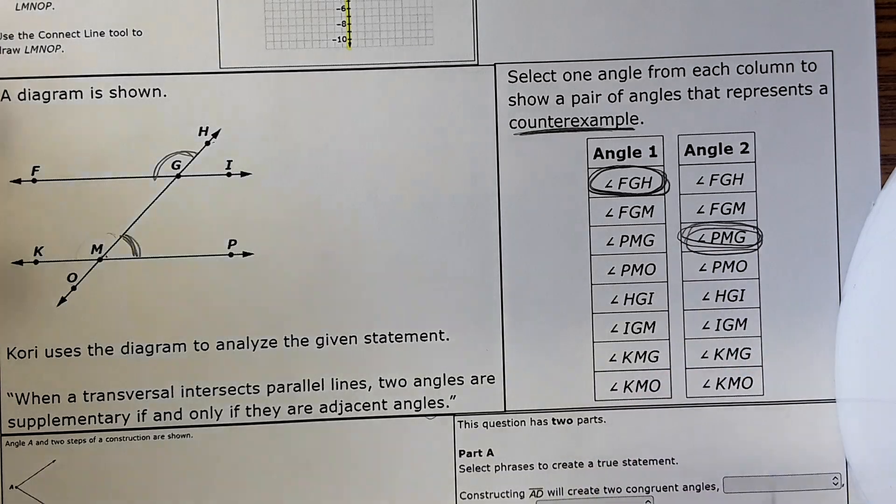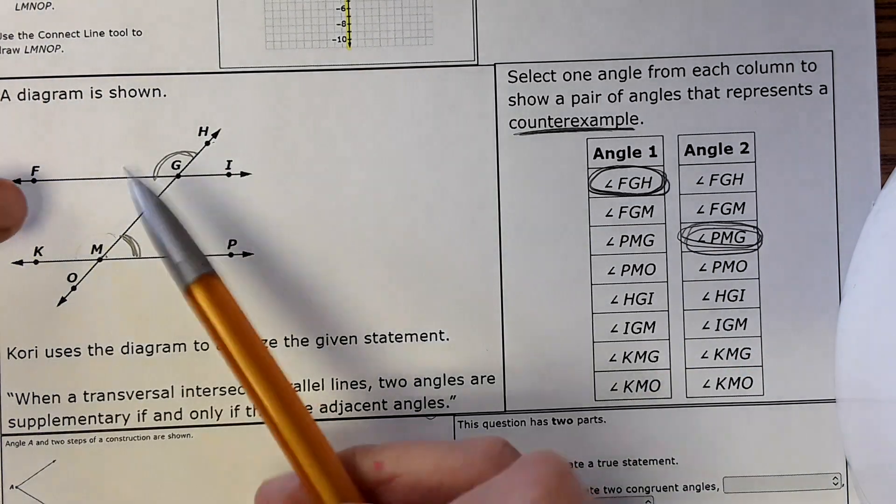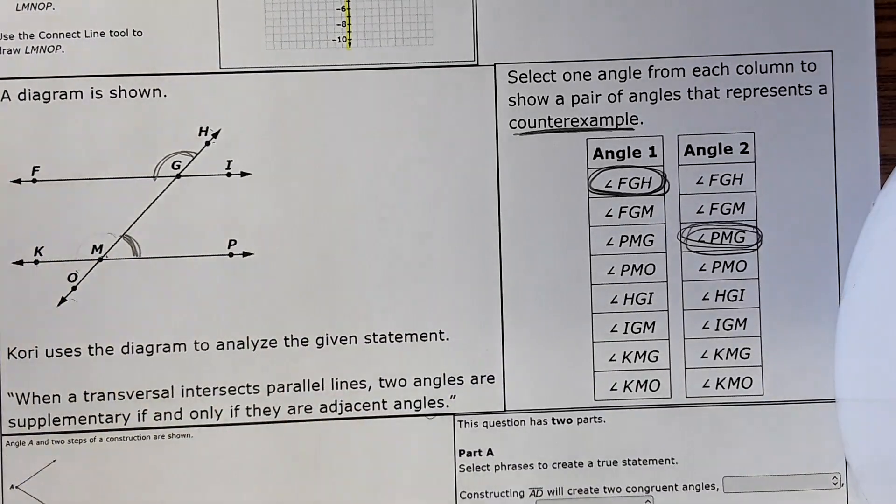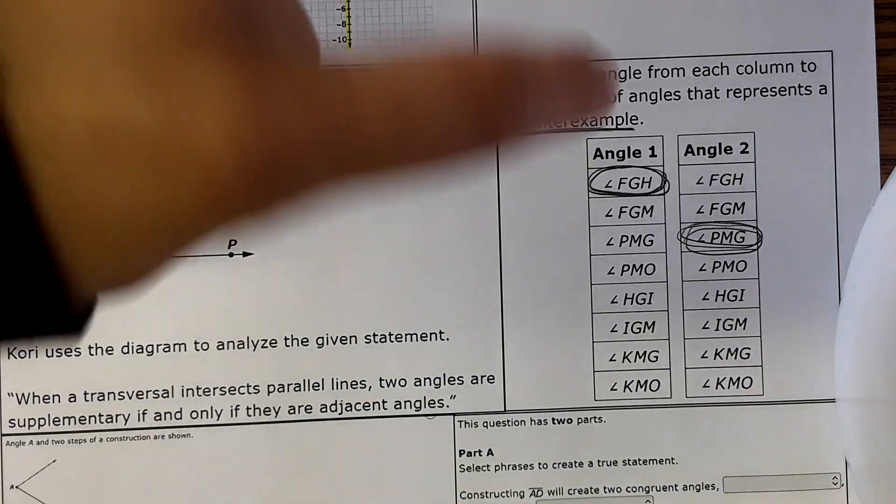There are other pairs that are also a correct answer. For example you could do FGH and KMO - these two would be supplementary. There's more than one correct answer but this would be one of them.